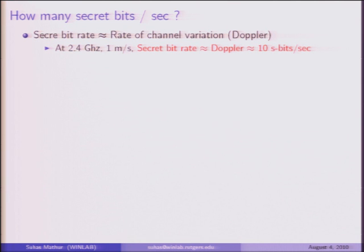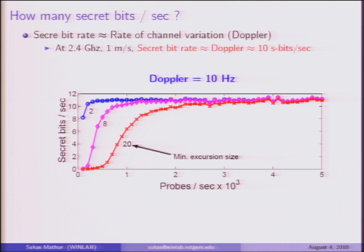An important question is how many secret bits per second can be derived—the rate of secret bits from the channel. This rate basically depends on the Doppler. The Doppler rate measures how quickly the channel between Alice and Bob changes as a function of time. At 2.4 GHz, if the effective rate of movement in the environment is about 1 meter per second, the Doppler is approximately 10 Hz. The secret bit rate cannot exceed the Doppler, because the excursion rate is bounded by Doppler frequency. This is confirmed experimentally: as you increase probes per second, the output saturates at around 10 bits per second—close to the Doppler of this example.